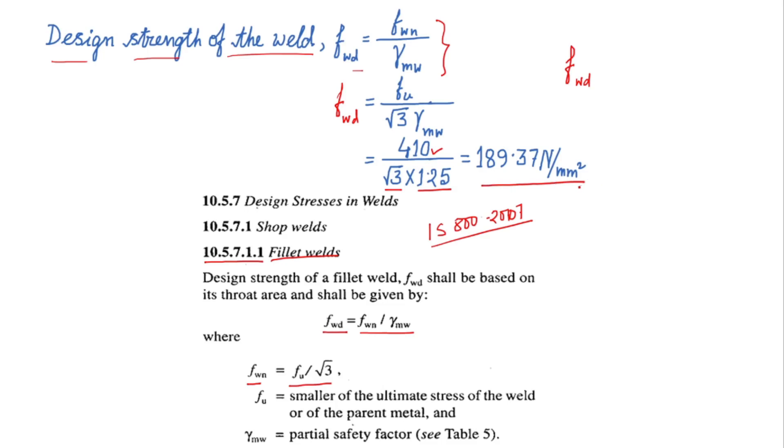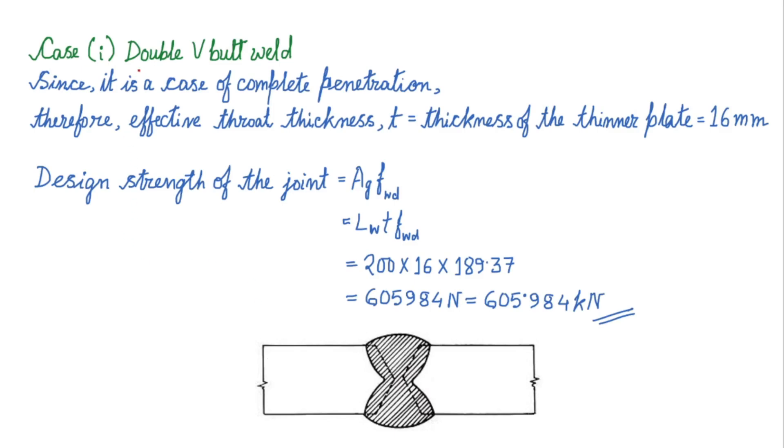Next for case 1 double V butt weld. This is an example of double V butt weld. See the two plates are joined by welding. If you see the edges of the two plates from the top it is one V, and from the bottom also another V we have found, so that's why this type of welding is called double V butt weld.